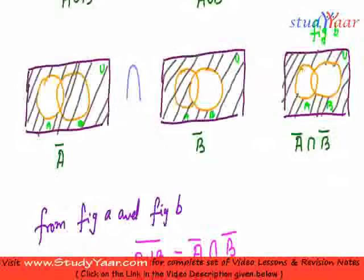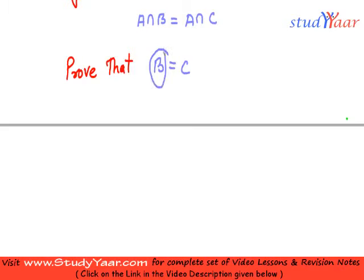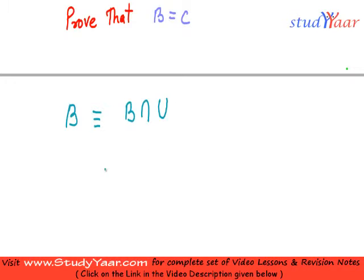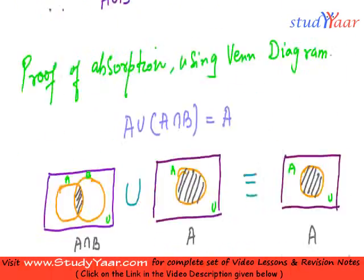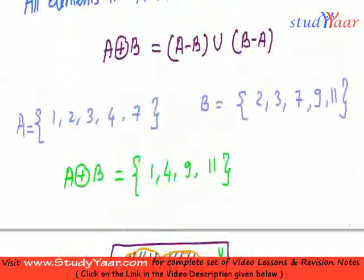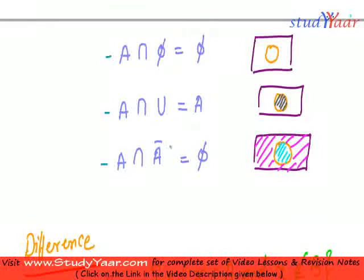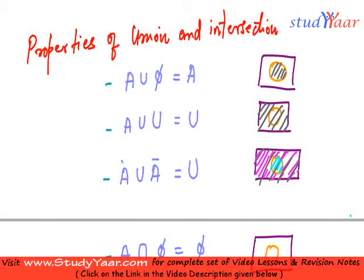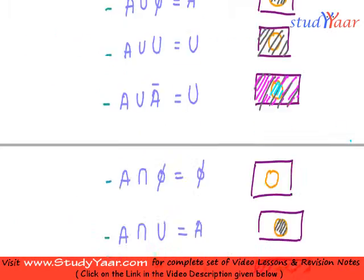So I am going to start off with the left hand side. I have b, and I can write b is equivalent to b intersection the universal set, because that is a property that I have read. Now I can also write this as equivalent to — the universal set is equivalent to a union a complement, because a union complement of a is equal to the universal set. So I have replaced the universal set with a union complement of a.